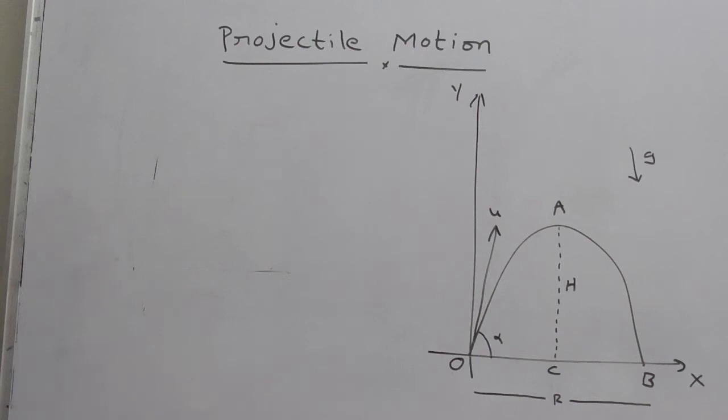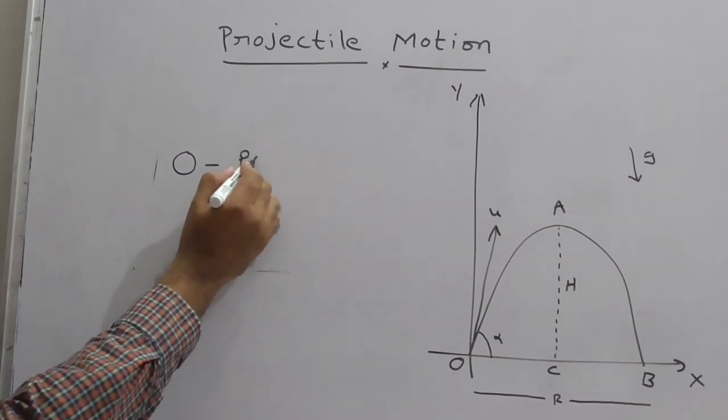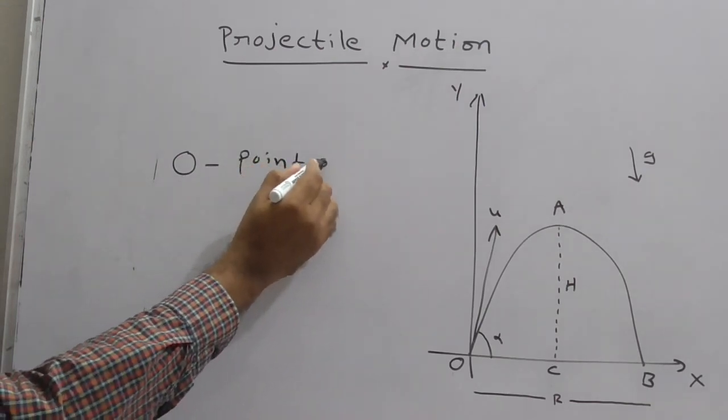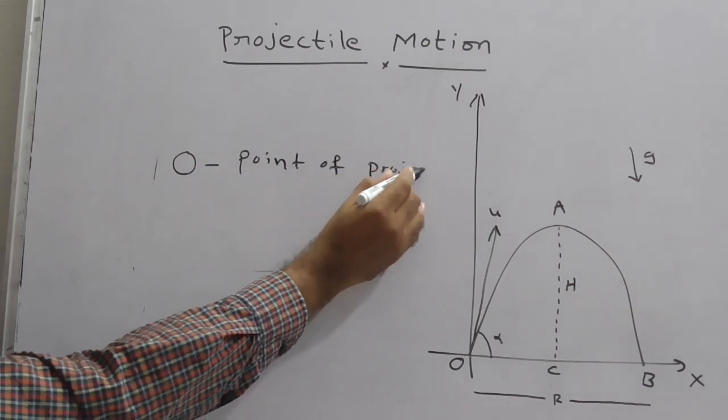Here, what are the observations? O point is known as point of projection. O is the point of projection.